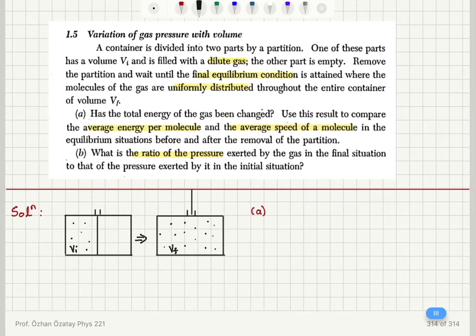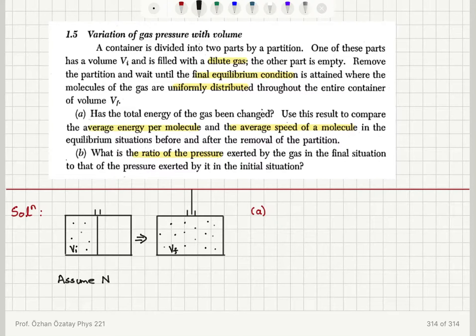The problem doesn't say that this container was isolated from the environment, so I can assume that at the beginning this container was in thermal equilibrium with its environment. Let's assume that I have a total of capital N molecules, since there is no statement about adding or removing molecules — the total number must be fixed. Also, for simplicity, let's assume that this is a monatomic gas.